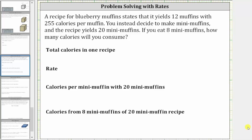A recipe for blueberry muffins states that it yields 12 muffins with 255 calories per muffin. You instead decide to make mini muffins and the recipe yields 20 mini muffins. If you eat eight mini muffins, how many calories will you consume?